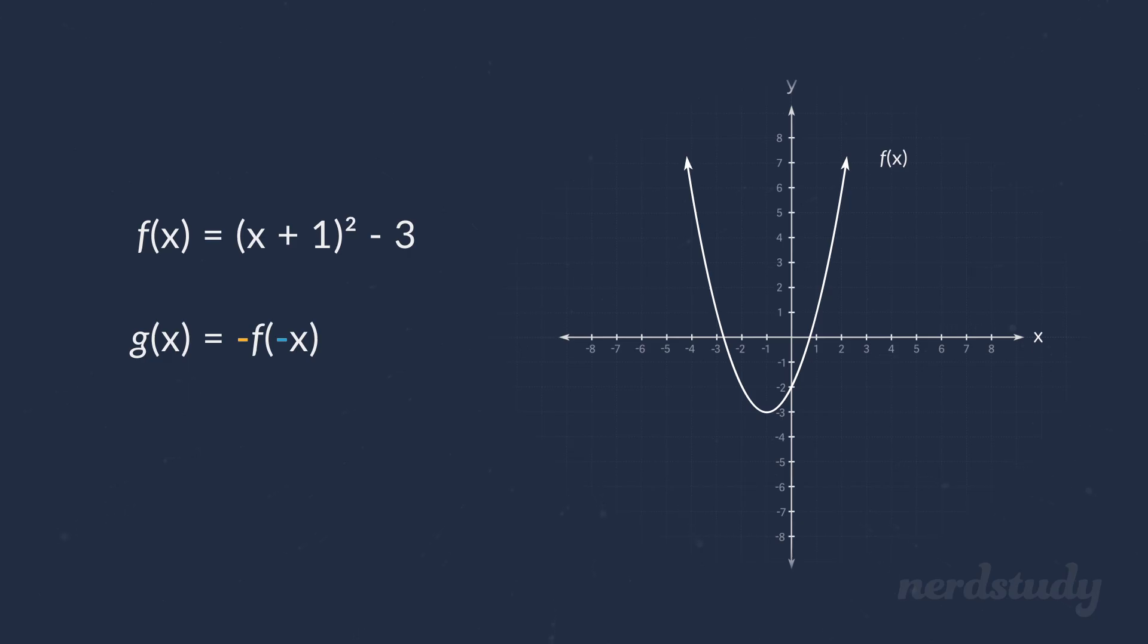Well, just by looking at where the negatives are, we can see that there will be a reflection on the x-axis as determined by this negative sign on the outside, as well as a reflection on the y-axis as determined by this negative sign on the inside.